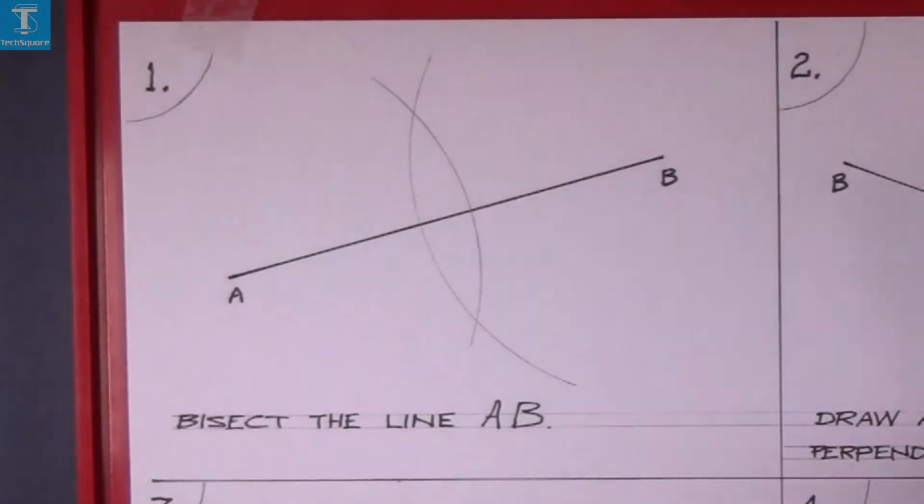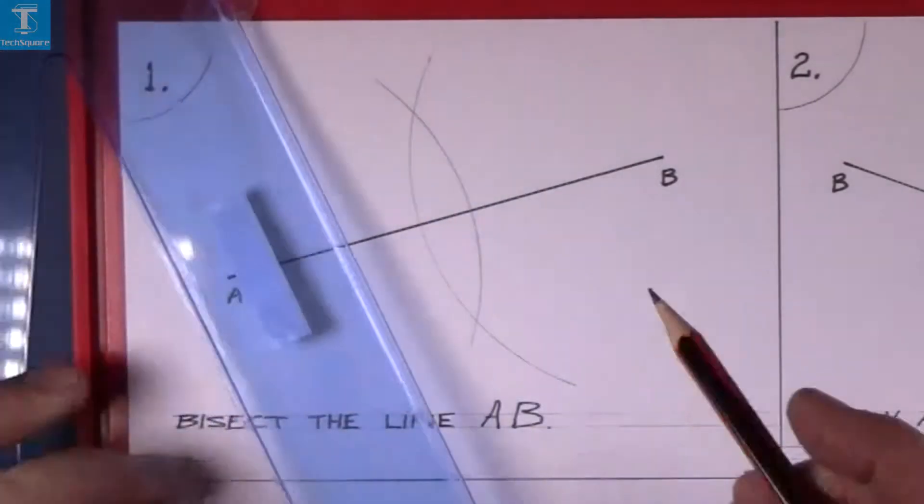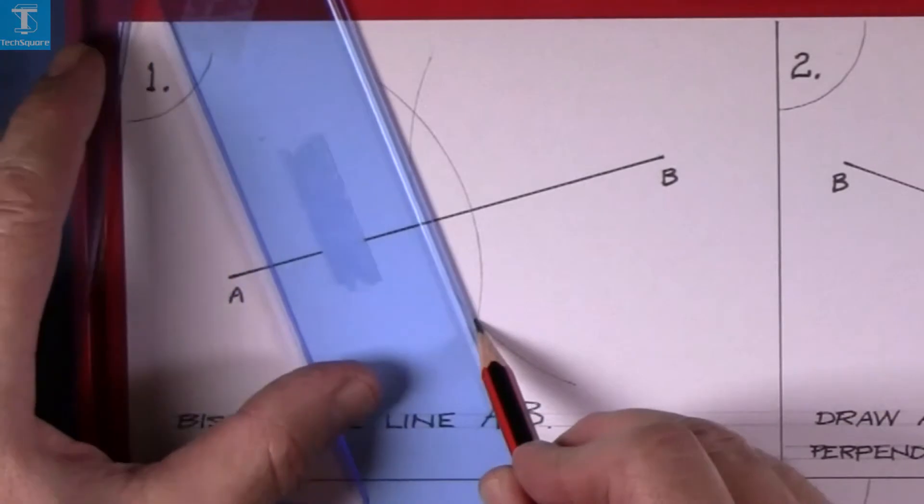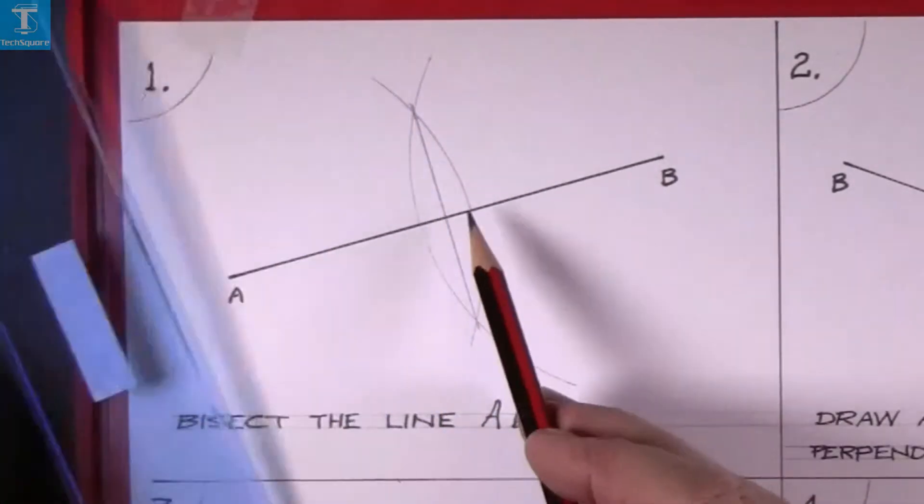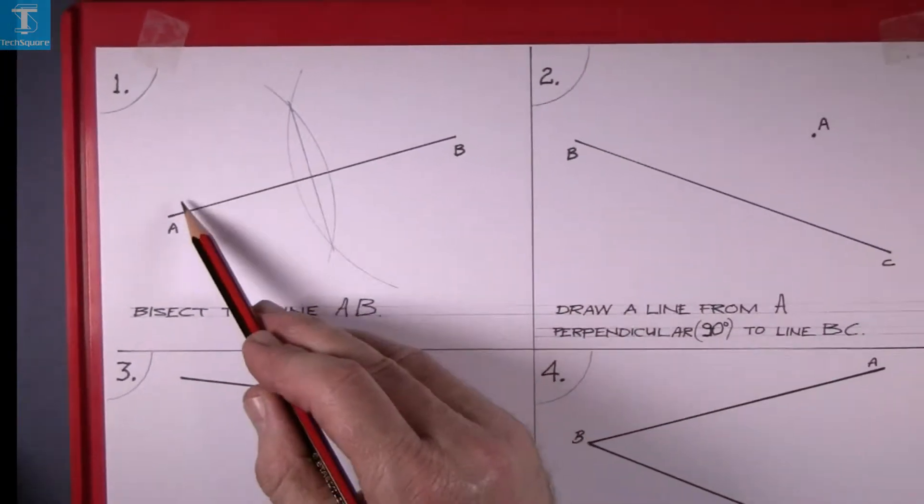Now you've created two points. So you join those two points across and that gives you the center of the line. So half there and half there.